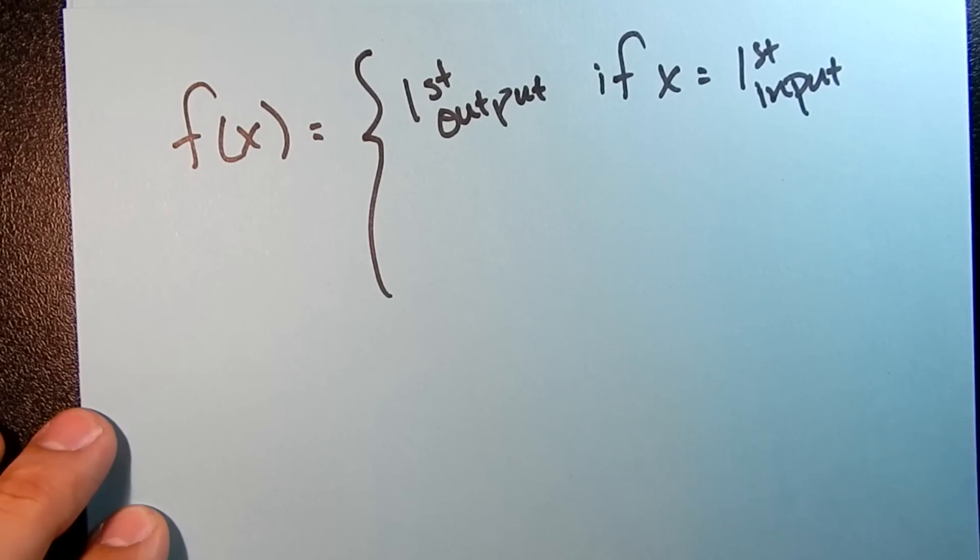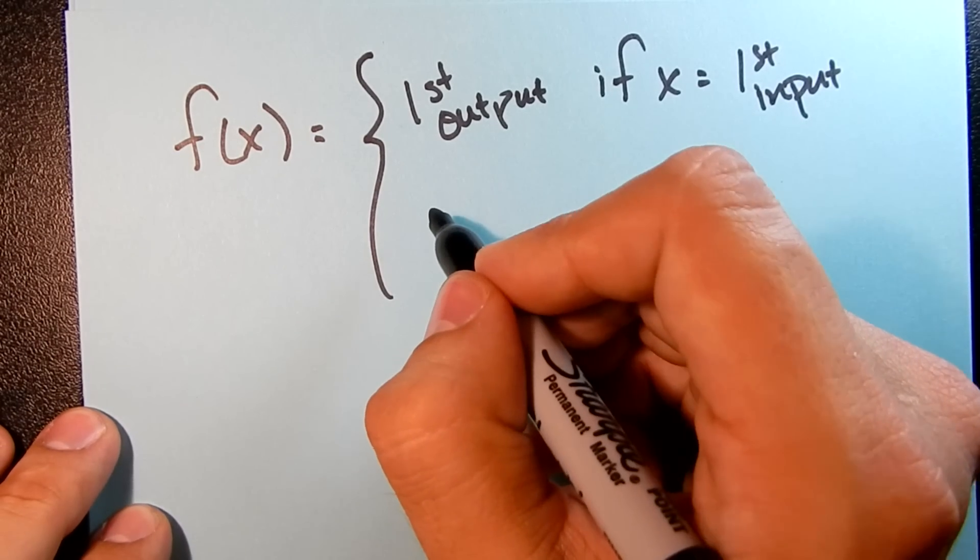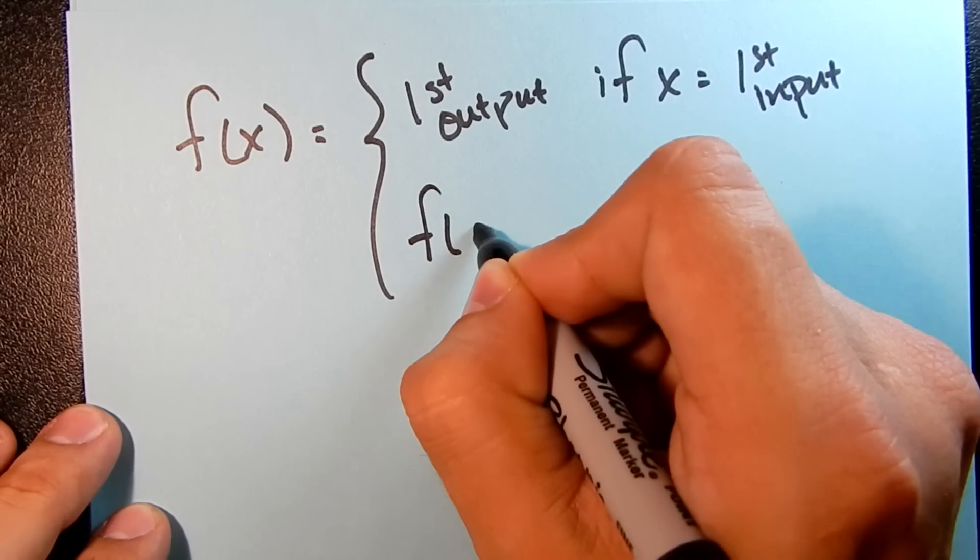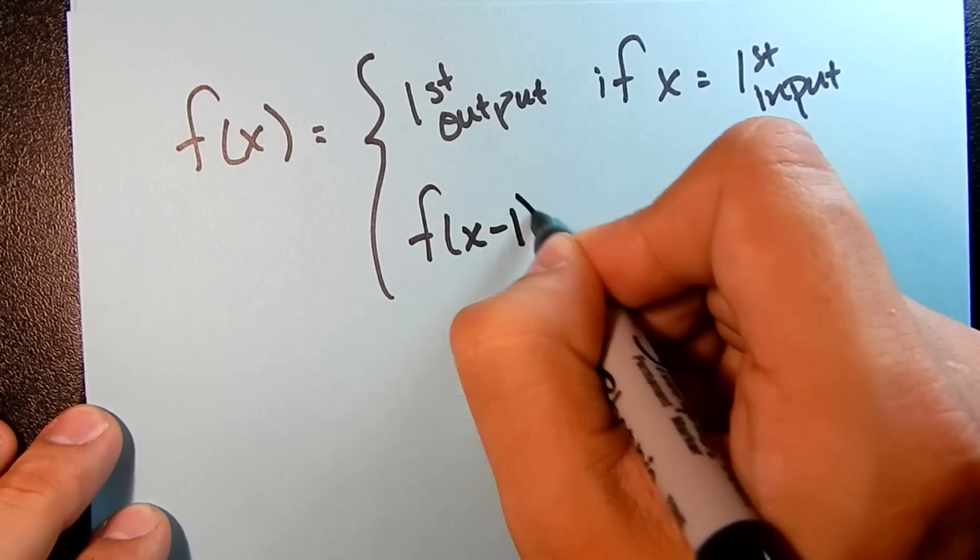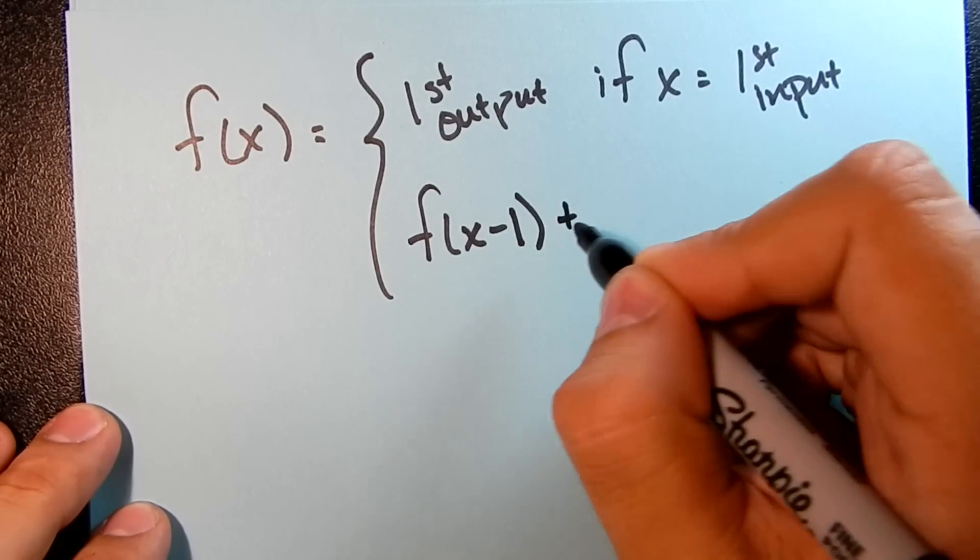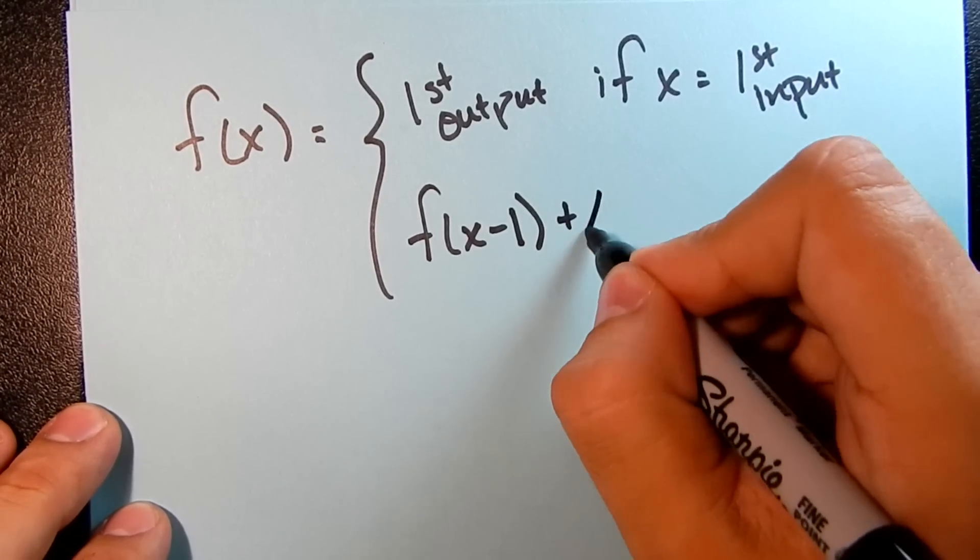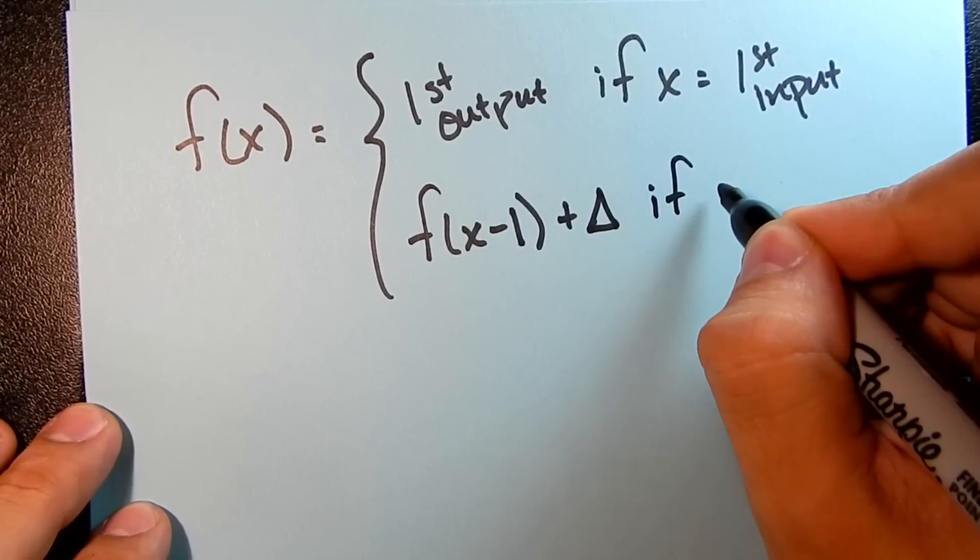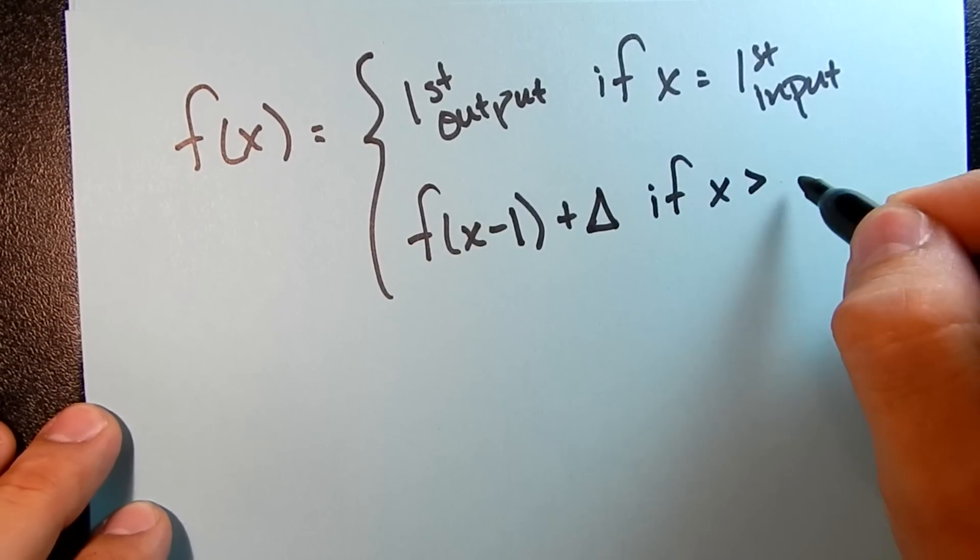Now, the next piece, with the recursive rule, we sort of have to reference the previous output. So f(x-1). And then we have to say, well, what is it doing every time? So in this case, we're going to add our delta term if x is greater than our first input.